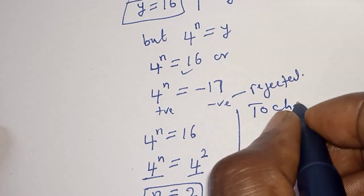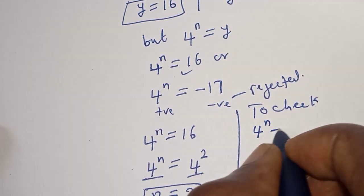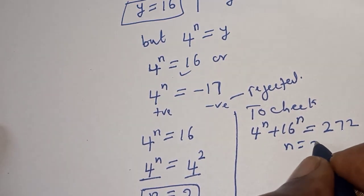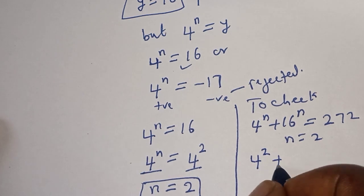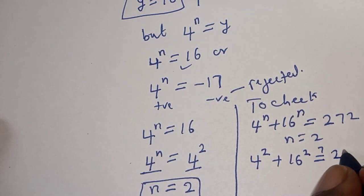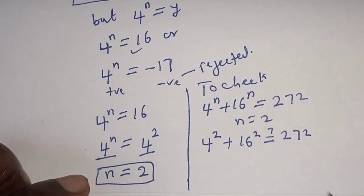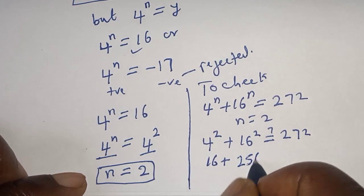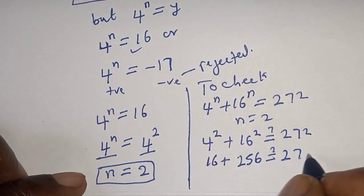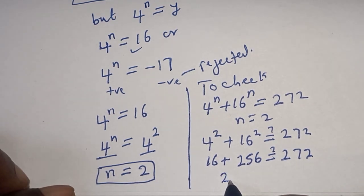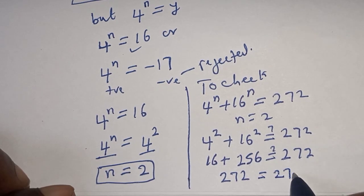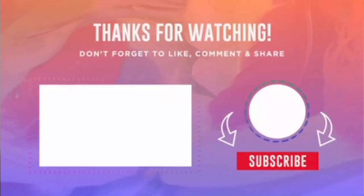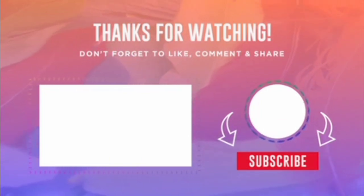Let's check to confirm our answer. We substitute n equals 2 into 4 raised to power n plus 16 raised to power n. We get 4 squared plus 16 squared, which is 16 plus 256, equal to 272. This equals 272, which satisfies the given equation at n equals 2. Before you leave, like, share, comment and subscribe. Thank you, bye bye.